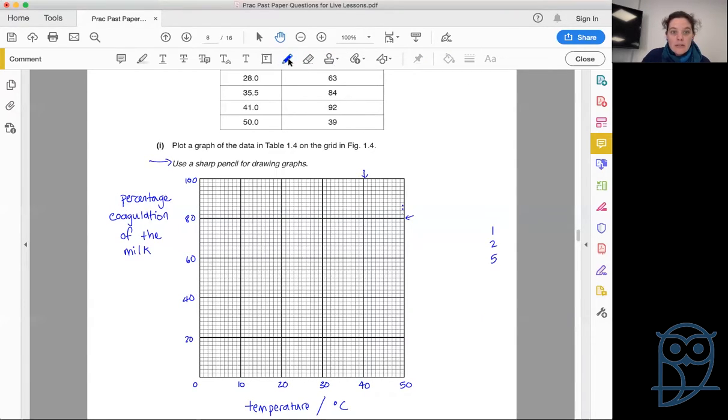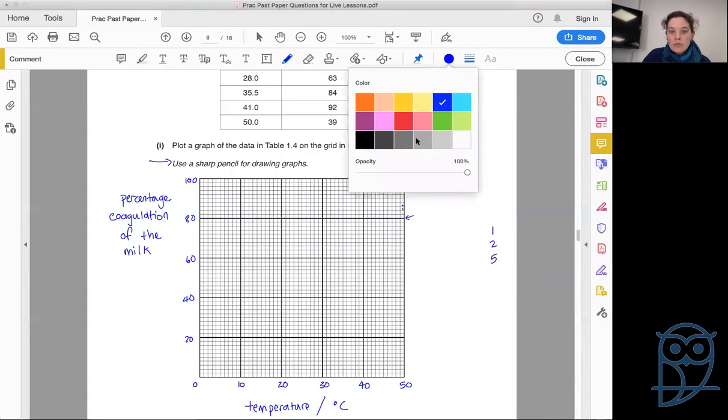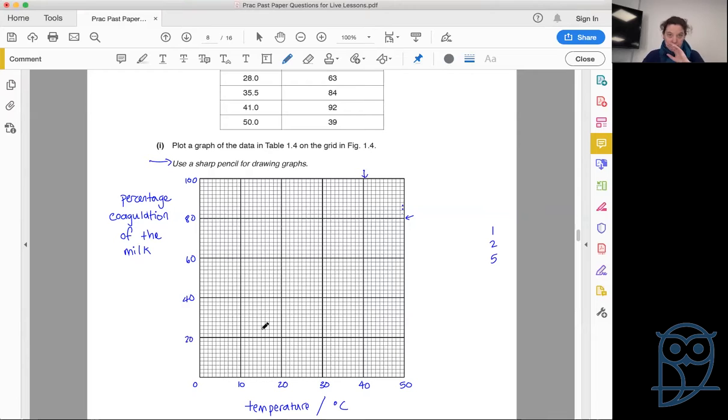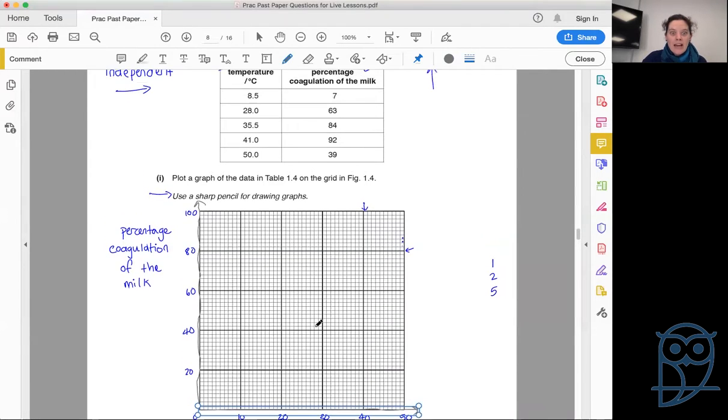We're going to get a pencil because we write in ink but we draw in pencil. We also use a ruler to draw our axes. We do draw our axes even though there's a grid provided - we're still drawing the axes with a ruler so that your lines are a lot straighter. Then we are ready to plot our points accurately.